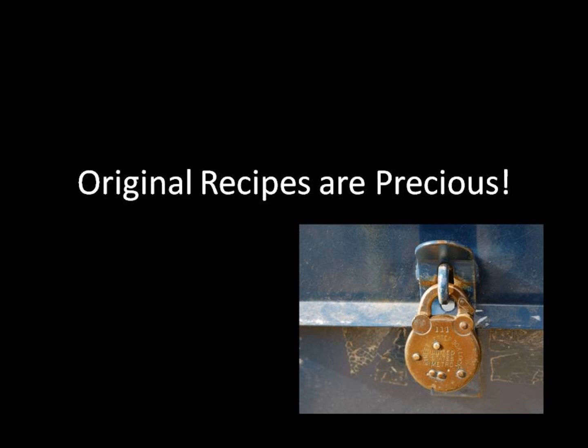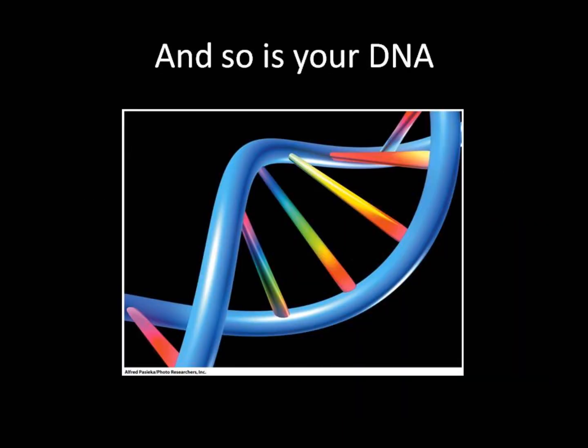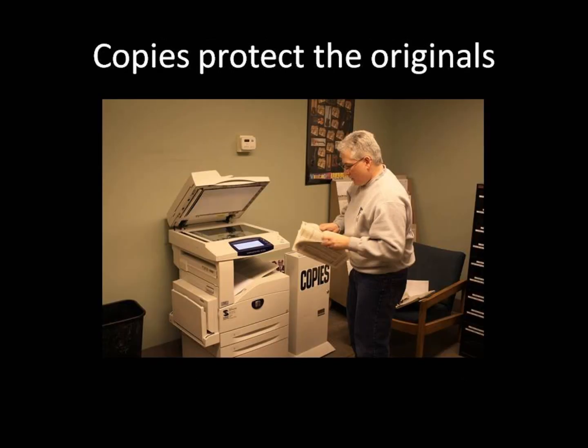Family recipes are very precious to many, and are sometimes even kept secret, or at least closely guarded and protected. Well, so is your DNA. It is a precious substance containing important information that must be closely protected, usually within the nucleus of your cells. Rather than risk damaging this precious information when we want to use it, it has to be copied. Copying the information allows us to protect the originals.